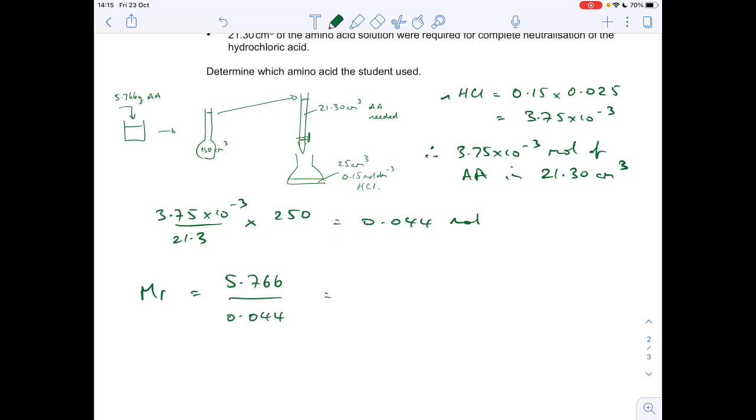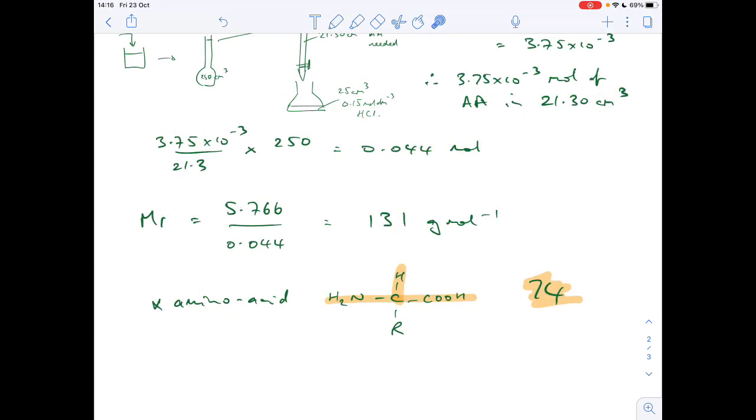So that's given us an Mr of 131 grams per mole. And of course this is an alpha amino acid, so it has to contain the essential part of an alpha amino acid: so C with an H on, a COOH, and an NH2.